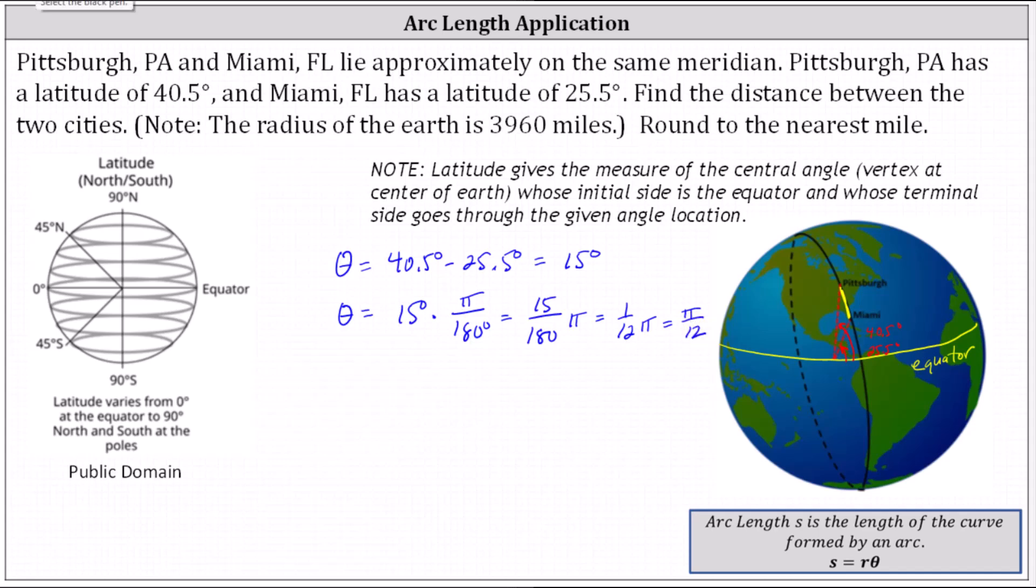And now we can find the arc length S, which will give us the distance between the two cities. The arc length S equals R times theta, or R is the radius of the Earth, which is 3,960 miles, times the angle theta in radians, which is pi divided by 12.